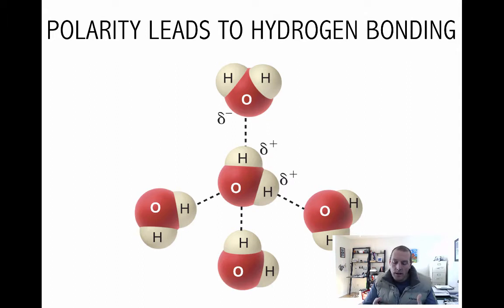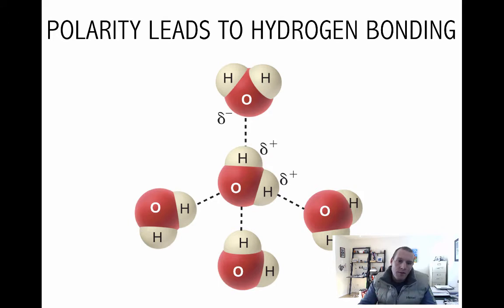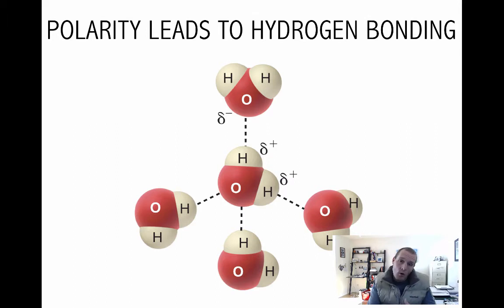In solid water — ice — all those bonds have become stabilized. They stabilize because we've lowered the temperature, so there's less molecular motion. As we lower the kinetic energy of the water molecules, ice begins to form. The molecules move around less due to lower kinetic energy from reduced heat. Ultimately, at zero degrees Celsius, each water molecule forms four hydrogen bonds with its neighbors, creating a crystalline lattice.